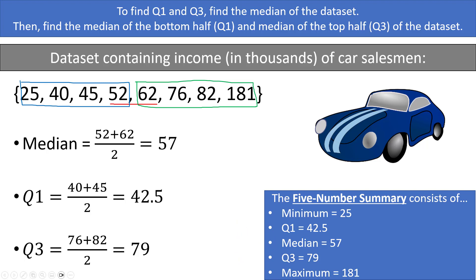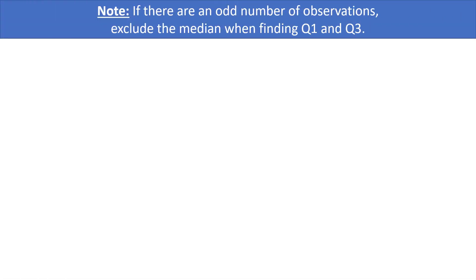Note that if there are an odd number of observations in your data set, you should exclude the median when finding Q1 and Q3. If there are an odd number of observations, there will be one single value in the middle as the median, and the data set doesn't nicely split into two halves. Therefore, we need to take the median out for the purposes of finding Q1 and Q3.